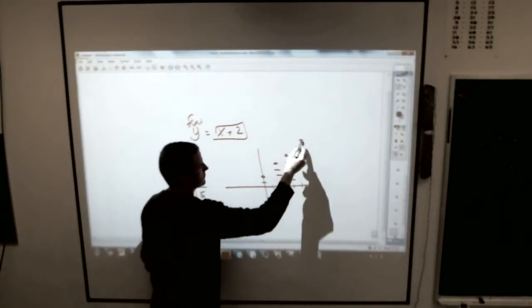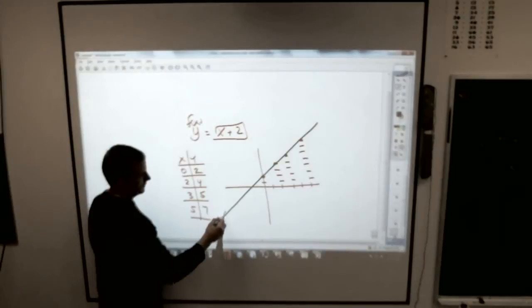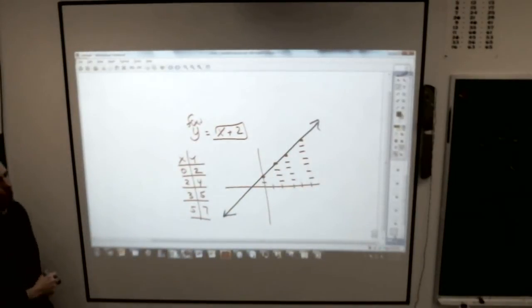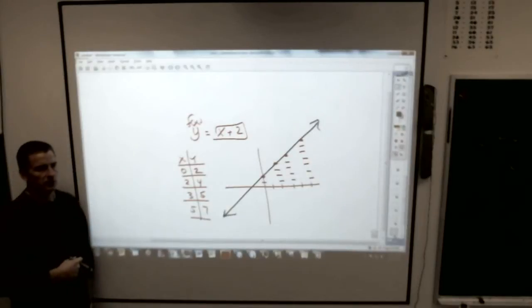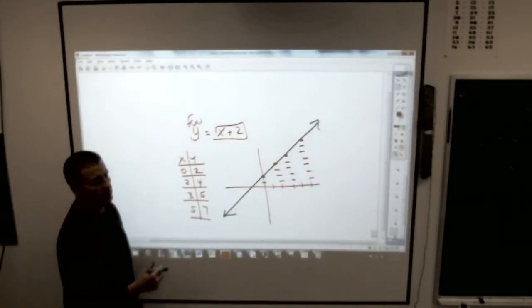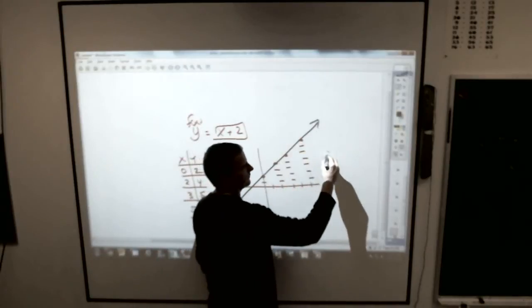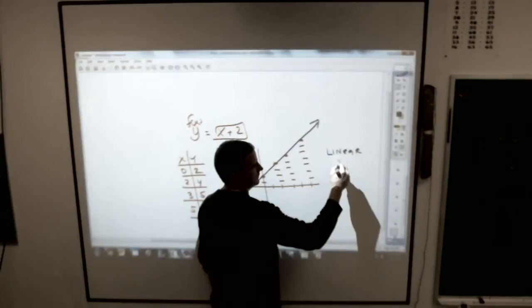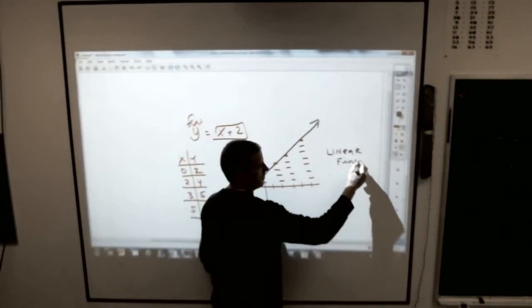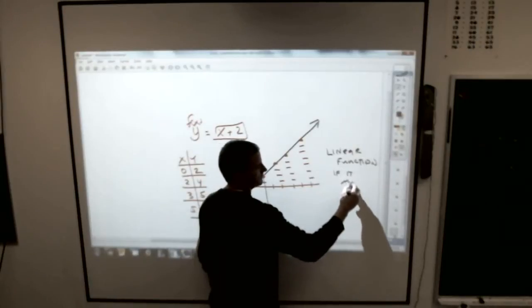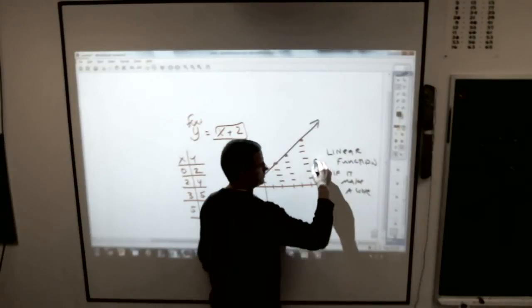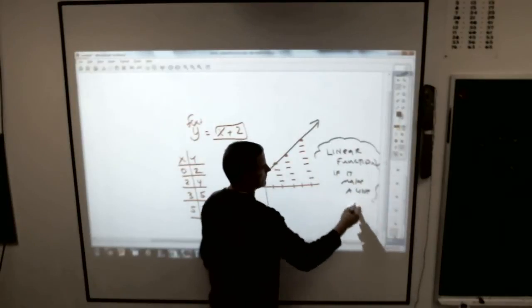If you connect the dots, what a nice line that is. If you connect the dots and they form a line, guess what it's called? I know, so this is a big jump for you. It's called a linear function. If it makes a line.